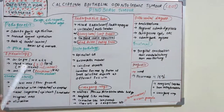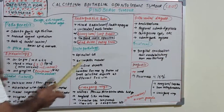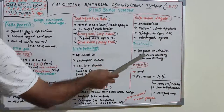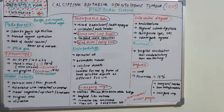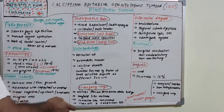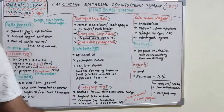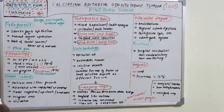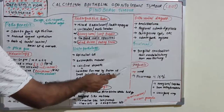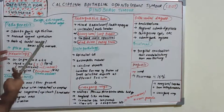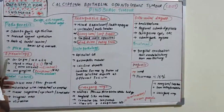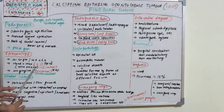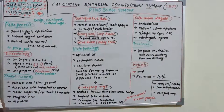For treatment, the approach is basically surgical enucleation, and in severe widespread cases, hemimandiblectomy or hemimaxillectomy should be performed. The overall prognosis is good, with a recurrence rate of around 15%.